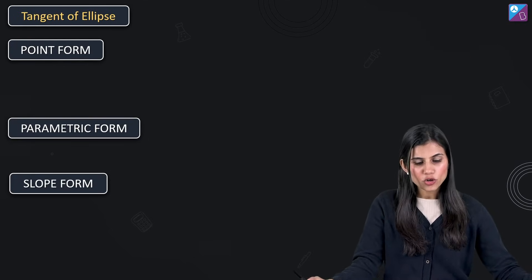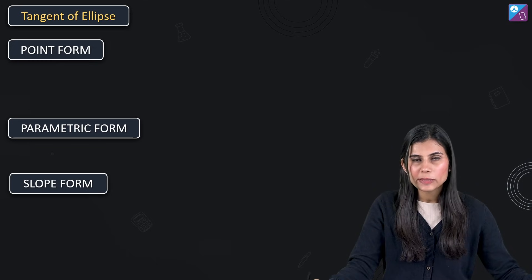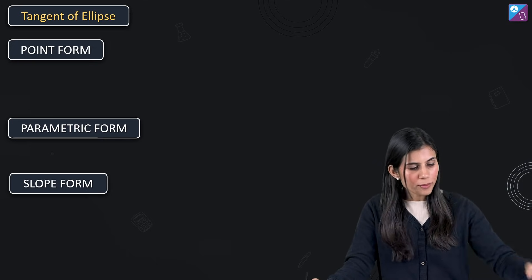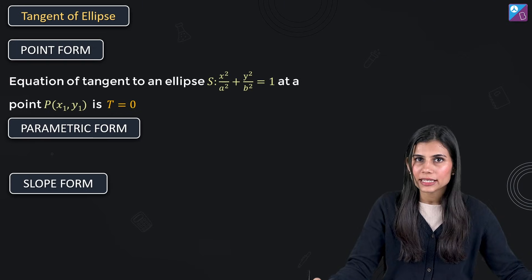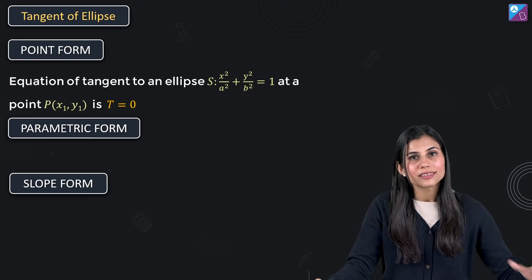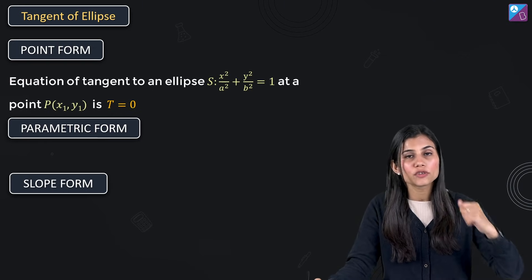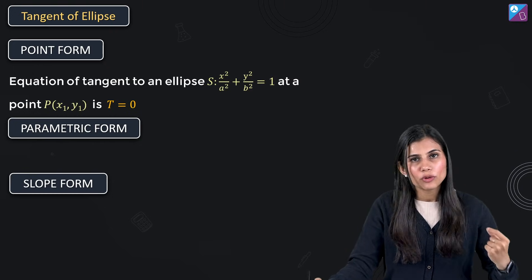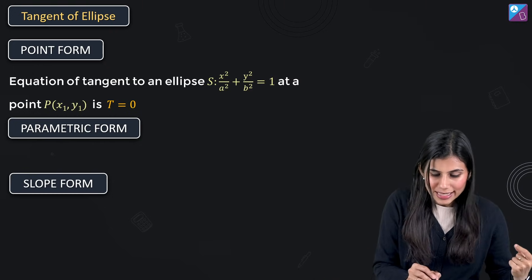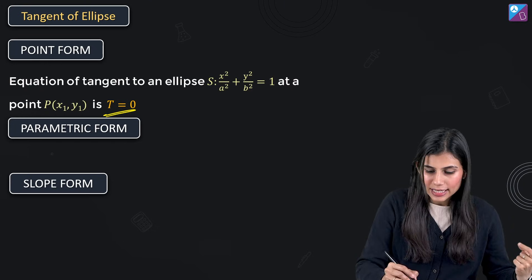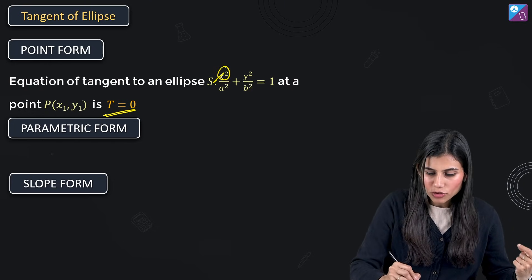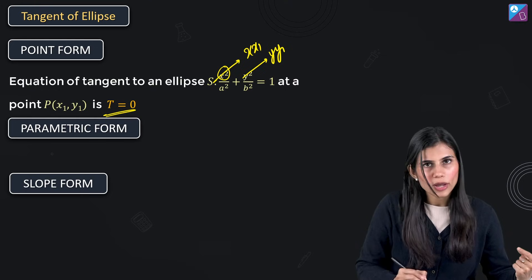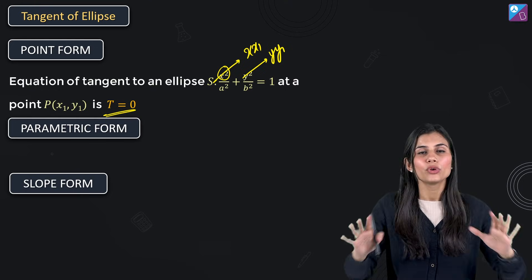The parametric coordinates of any point on the ellipse are (a cosθ, b sinθ). For the equation of tangent to the ellipse, again there are three forms: point form, parametric form, and slope form. In point form, if (x1, y1) is the point of tangency, write the tangent as T = 0 — replace x² with xx1 and y² with yy1 in the ellipse equation and you are done.